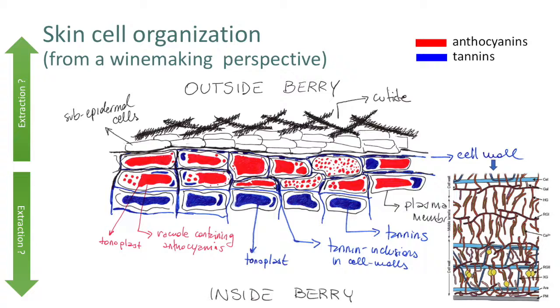Now, just looking at this structure, one of the questions that we wanted to answer — almost theoretical in nature, but with practical implications — is how extraction happens in this model. Is extraction happening during winemaking from the outside of the berry, in which case we might have to dissolve that cuticle, or is extraction happening from within the berry?